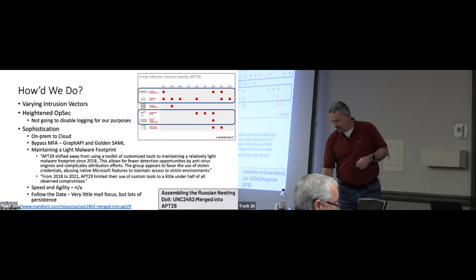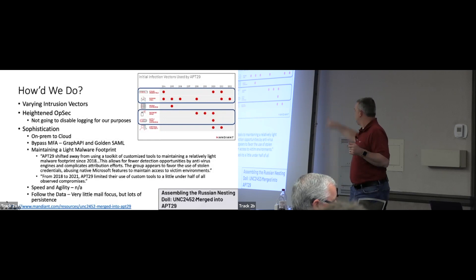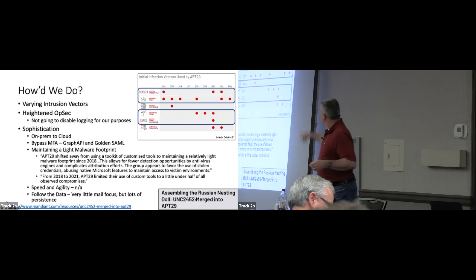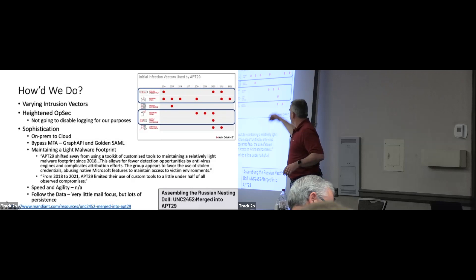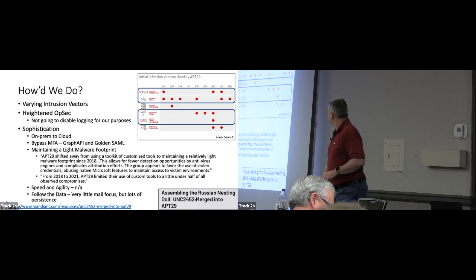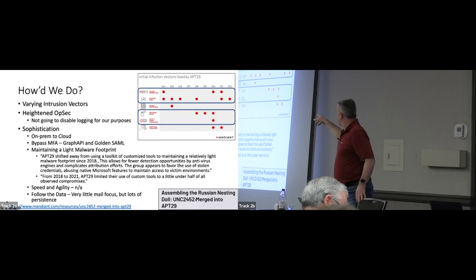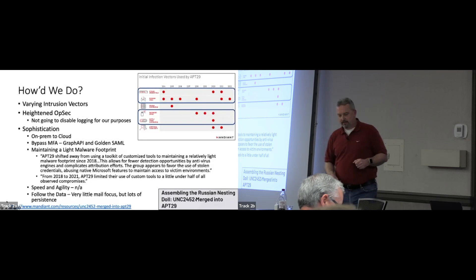Looking at our runbooks, APT29 uses a lot of varying intrusion vectors. We stole credentials — check. We did phishing but kind of stopped doing it because phishing is so common. Password spray — did that. Supply chain — did that. So we covered a nice range of their initial attack vectors. The heightened OPSEC table includes disabling logging, but from a detection perspective we're not trying to do that — if there are no logs, we wouldn't have a CTF or workshop. We want to call out that defensive evasion and clearing audit logs are techniques — maybe turn it off during the emulation momentarily — but just turning off logging is self-defeating for the purpose of up-leveling analysts.